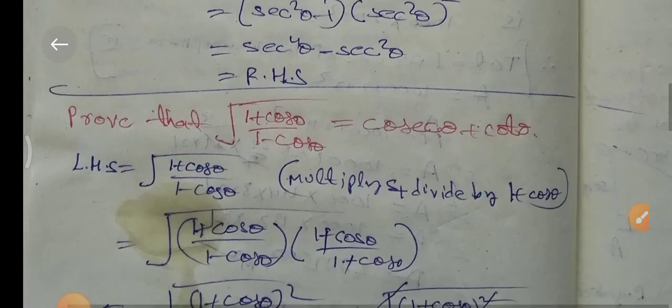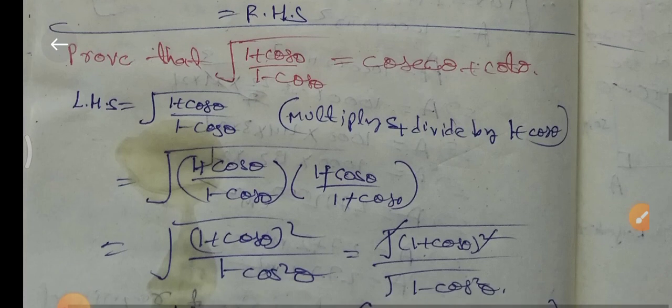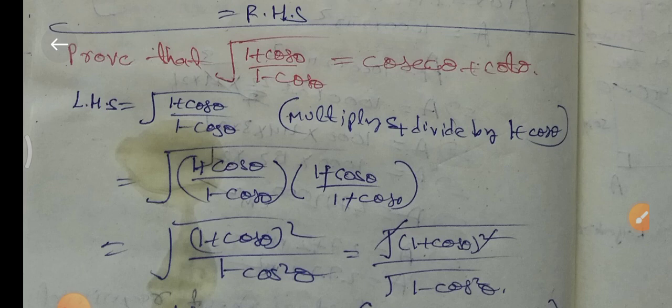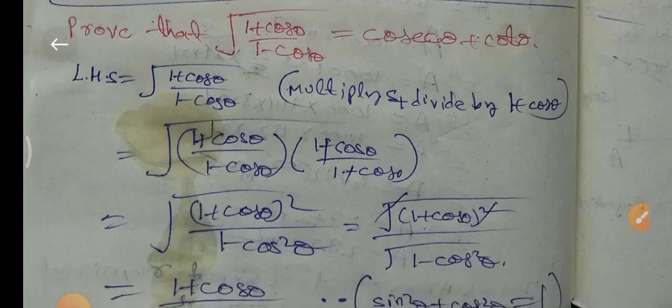Next: prove that root of (1 plus cos θ) over (1 minus cos θ) equals (1 plus cos θ) over sin θ. Left hand side: root of (1 plus cos θ) over (1 minus cos θ). We rationalize by multiplying and dividing by (1 plus cos θ). Therefore we multiply top and bottom by (1 plus cos θ).